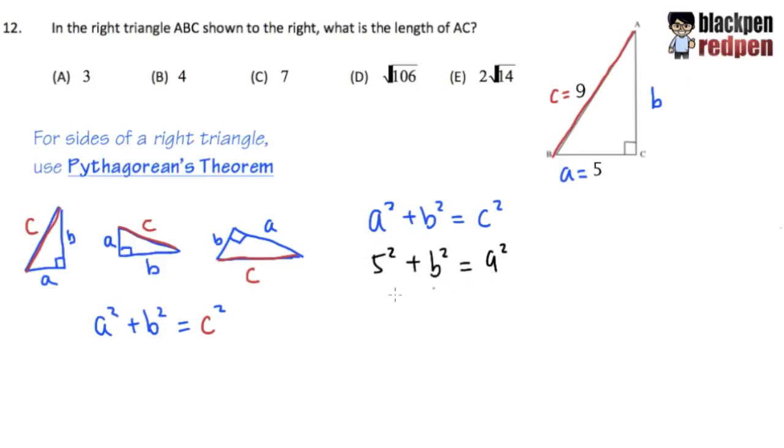And to solve this equation, we will first work out the power. 5 squared, that will give us 25, and B squared, we don't know, so we'll just keep it as plus B squared. And this will be equal to 9 squared, 9 times 9, which is 81. And to solve for B squared, we will have to first minus 25 on both sides, so that the 25 will cancel each other out. And then, we'll end up with B squared equals to 81 minus 25, that will give us 56.